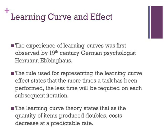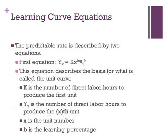The learning curve theory states that as the quantity of items produced doubles, costs decrease at a predictable rate. The predictable rate is described by two equations. The first equation: Y sub x is equal to k times x to the power of log base 2 of b. This equation describes the basis for what is called the unit curve.